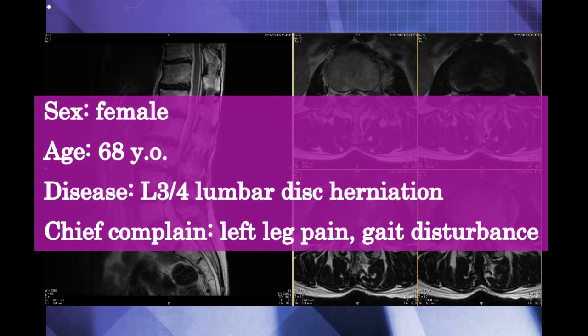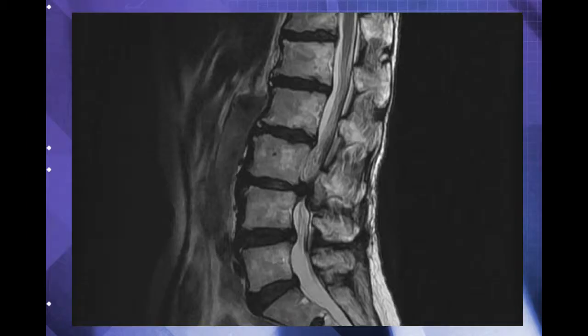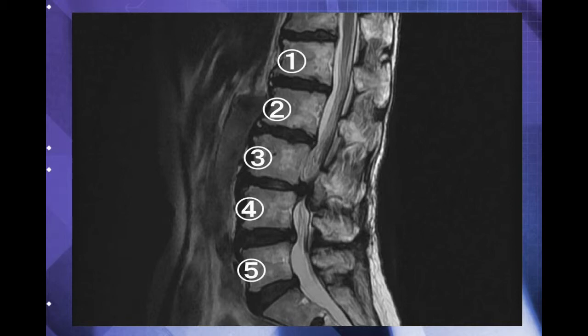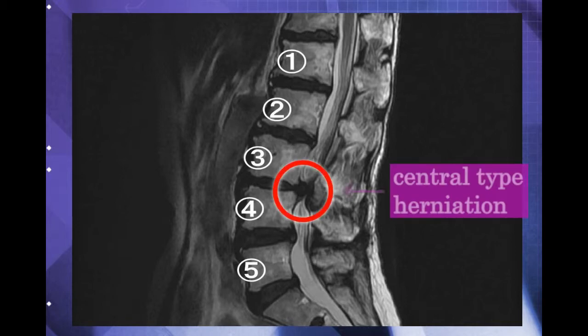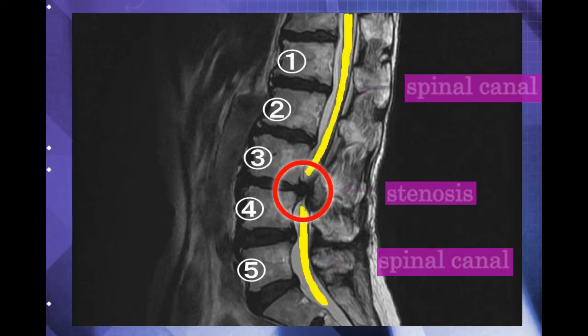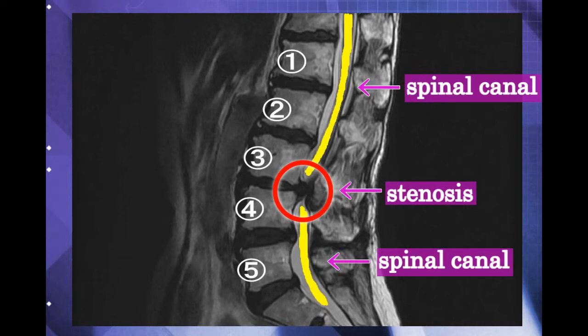The patient is a 68-year-old female who suffered from L3-4 level lumbar disc herniation. Due to a huge central type herniation, spinal canal stenosis also occurred. Her symptoms are a combination of spinal canal stenosis and radiculopathy.